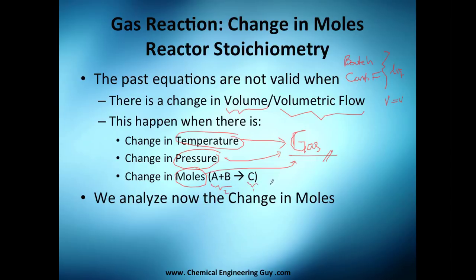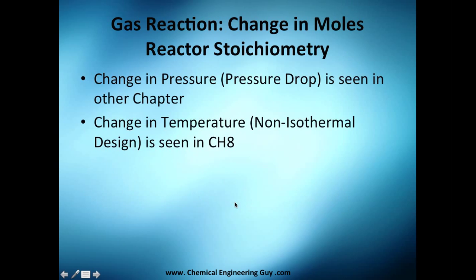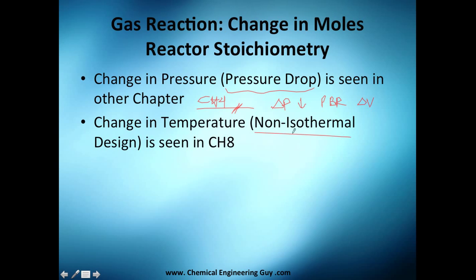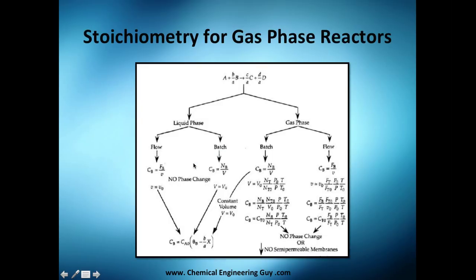For example, two moles go in and one mole comes out — there is a change in moles. We're going to first analyze how the change in moles affects our equations. The pressure drop is covered in chapter 4 for packed bed reactors, and the change in temperature is covered in chapter 8 on non-isothermal design. For now, we focus only on the change in volume due to mole changes.